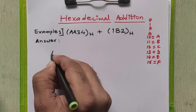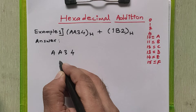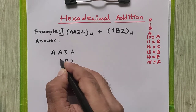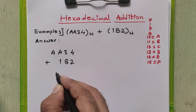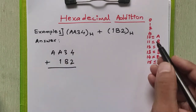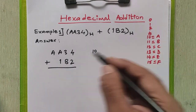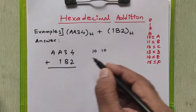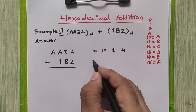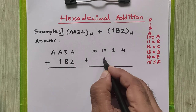Now I will show you how to add these two numbers. We will write here: A, A, 3, 4 plus 1, B, 2. We want to add this. So we will just replace A by 10, next A by 10, then 3 and 4 plus 1.